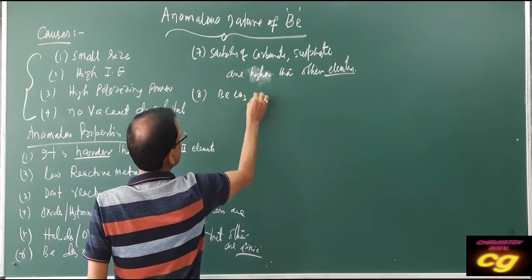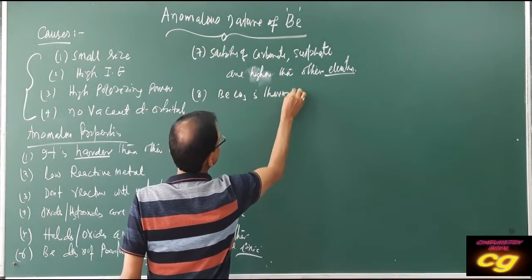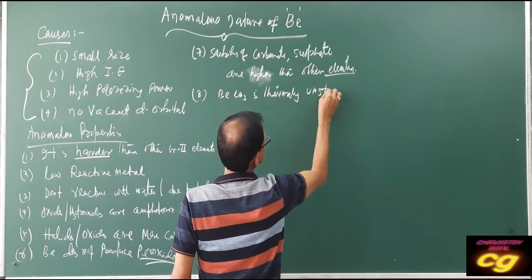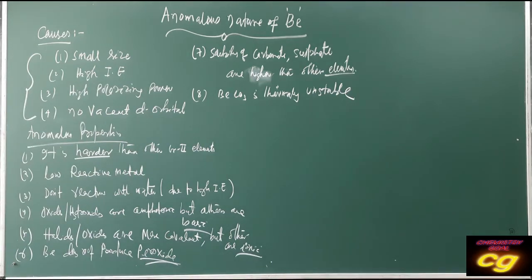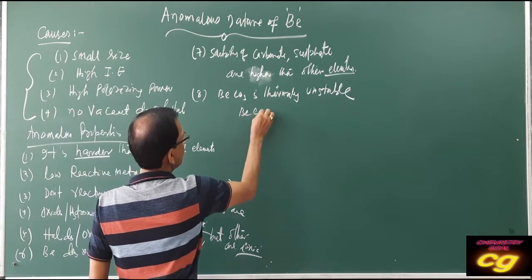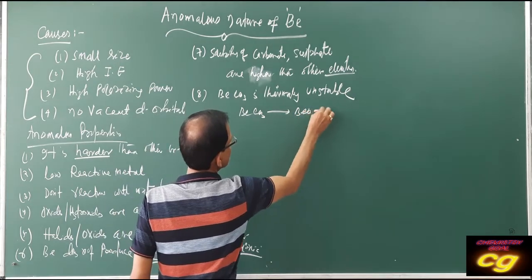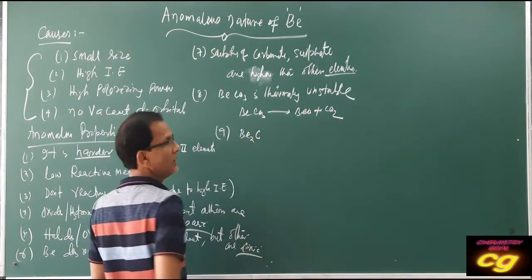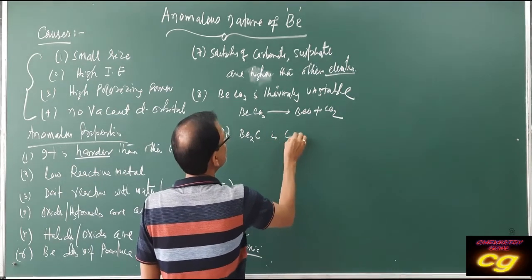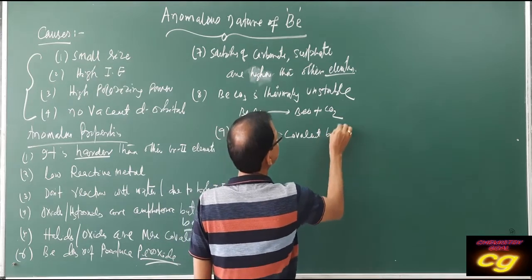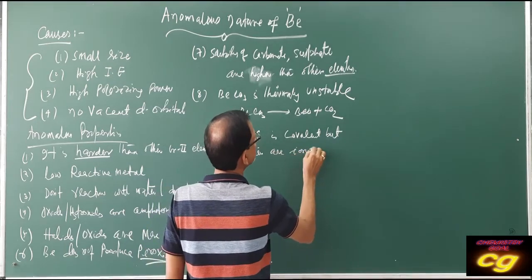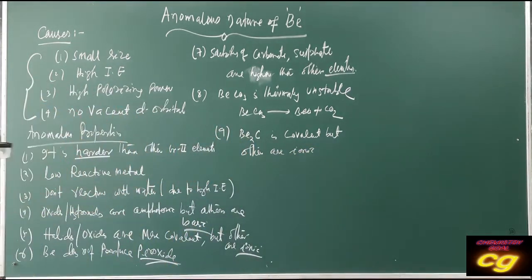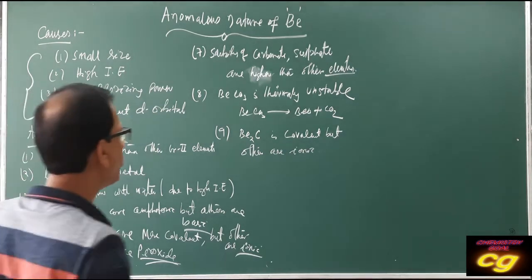Beryllium carbonate is thermally unstable — its stability is very less. It decomposes to beryllium oxide and carbon dioxide. But other carbonates like magnesium carbonate and calcium carbonate have more ionic character and are more stable.